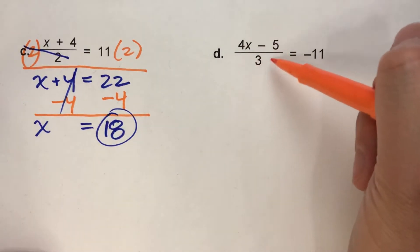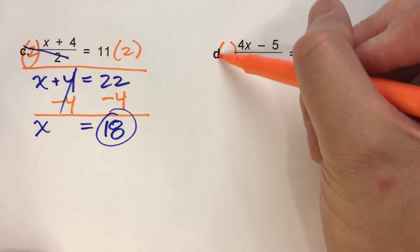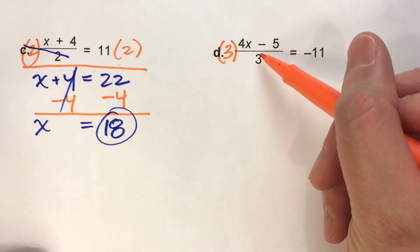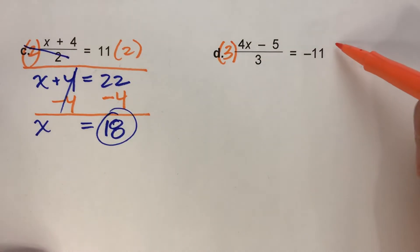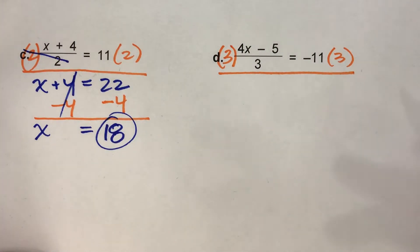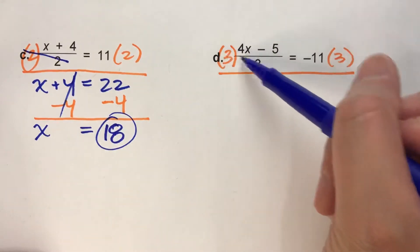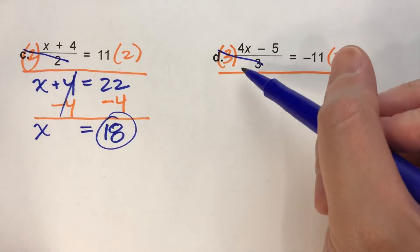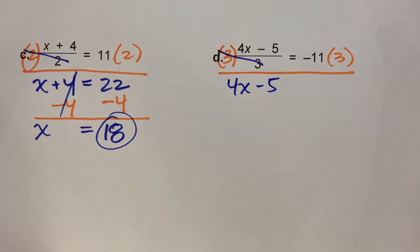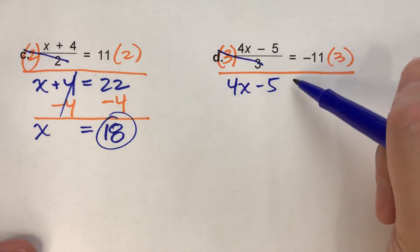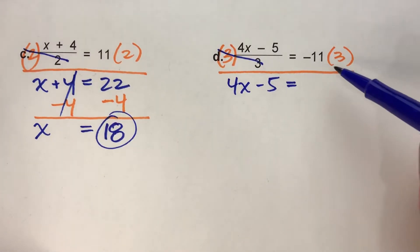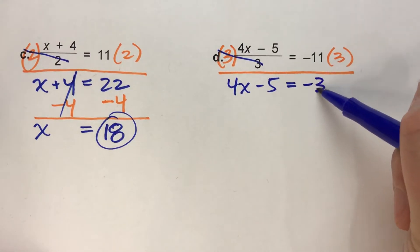To undo dividing by 3, we're going to multiply by 3. What I do to one side, I have to do to the other side. Multiplying and dividing by 3 undo each other, so the 4x minus 5 drops down. The equal sign drops down, and on the other side, negative 11 times 3 is negative 33.